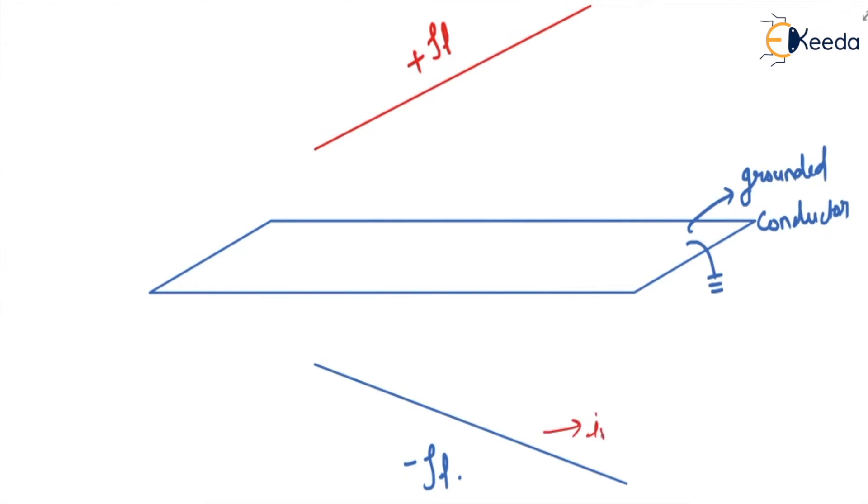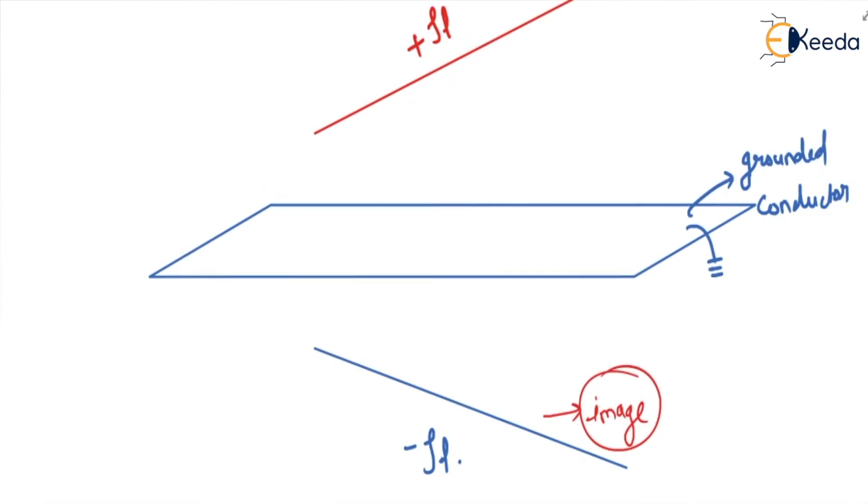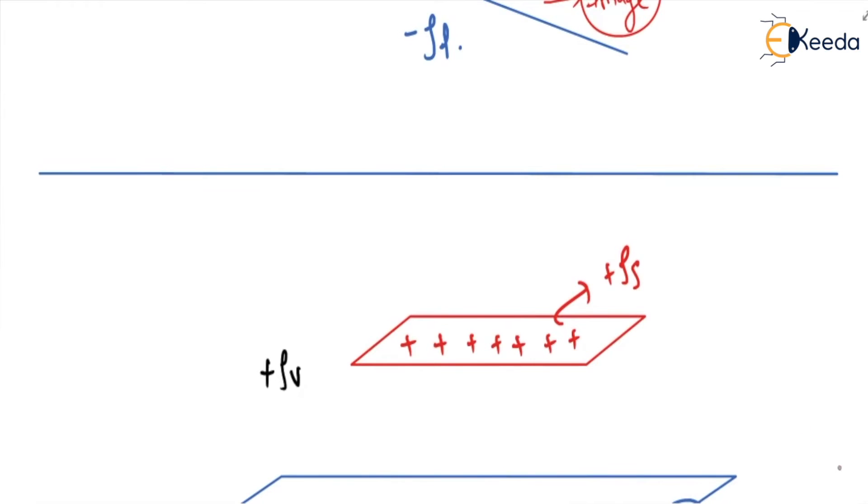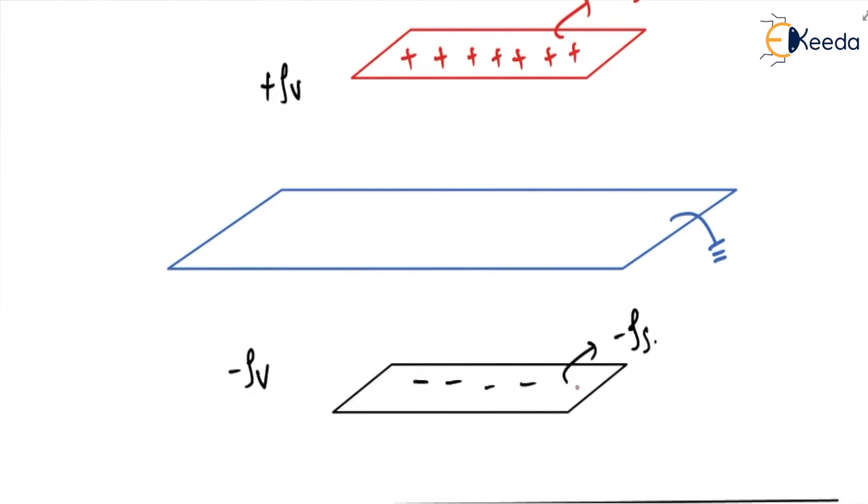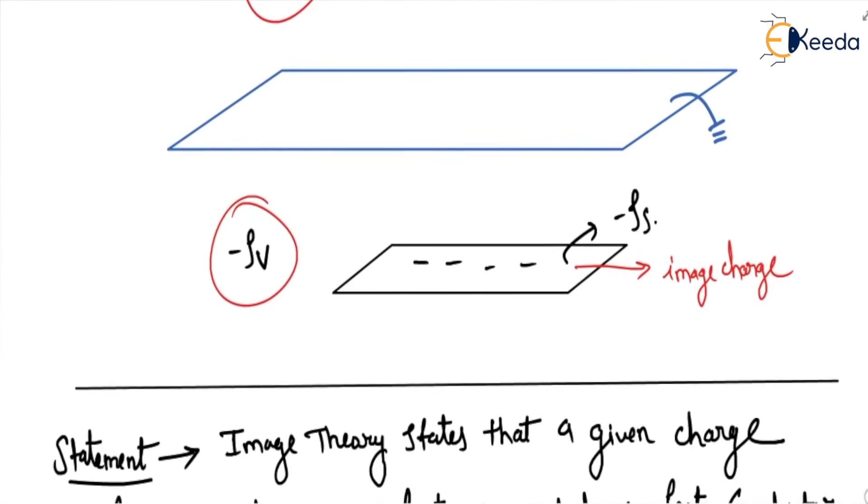If there is plus rho s above the grounded conductor, then at the same height below the grounded conductor minus rho s, this is image charge. If here plus rho v, then below conductor will be minus rho v. This is called as image theory.